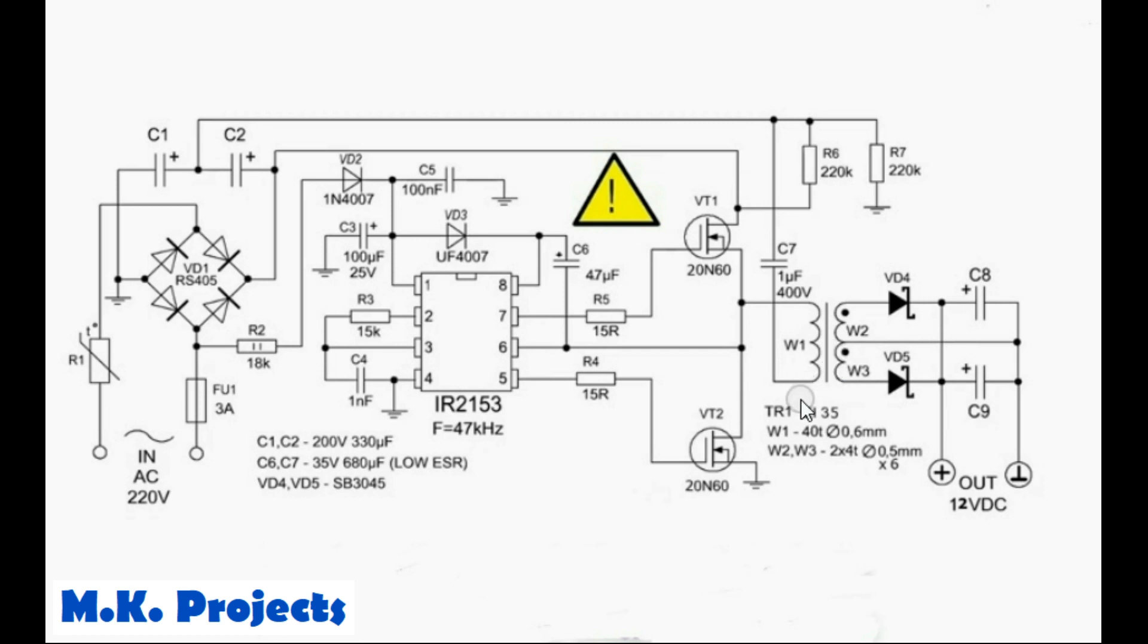The winding dimensions are shown here. For the primary, you can use 0.6 millimeter enameled copper wire and wind 40 turns. For the secondary, wind 4 turns on each side with a center tap for easy rectification using just two diodes in a single package. The output capacitors are rated at 680 microfarads each and 35 volts. This will give you a DC output of 12 volts with the windings shown here. Since there's no feedback, there's no voltage regulation, but the voltage is very stable with the given turns ratio.